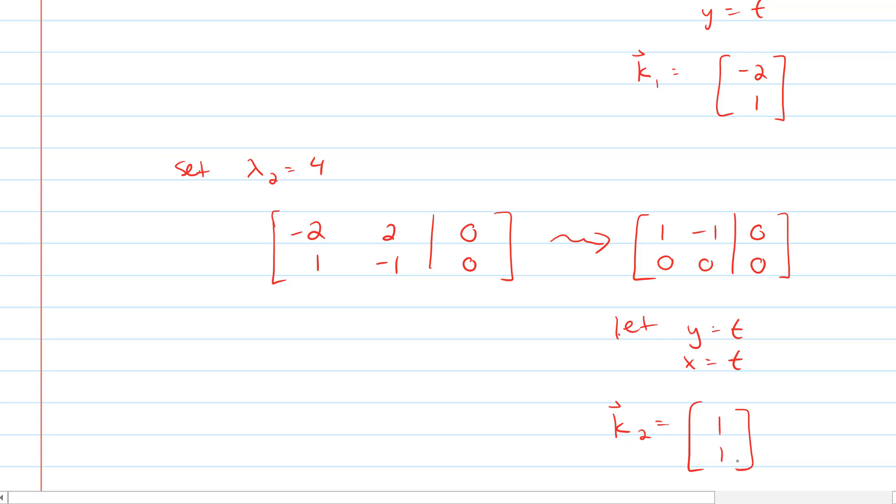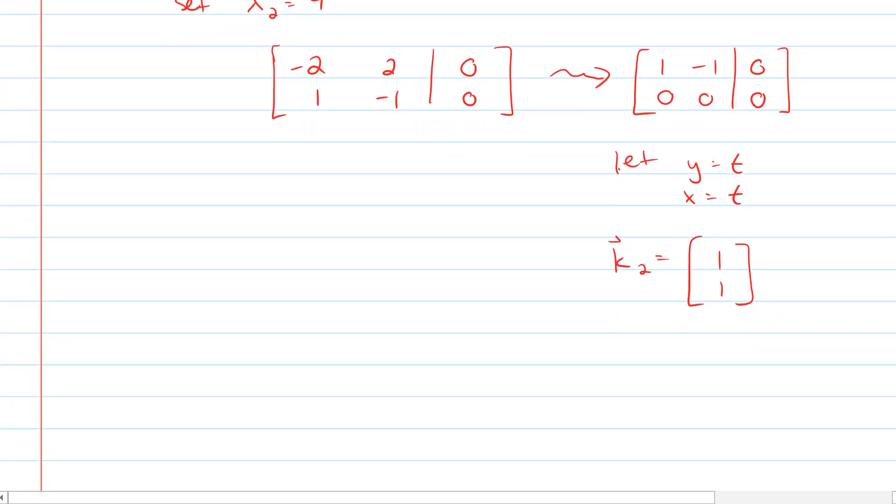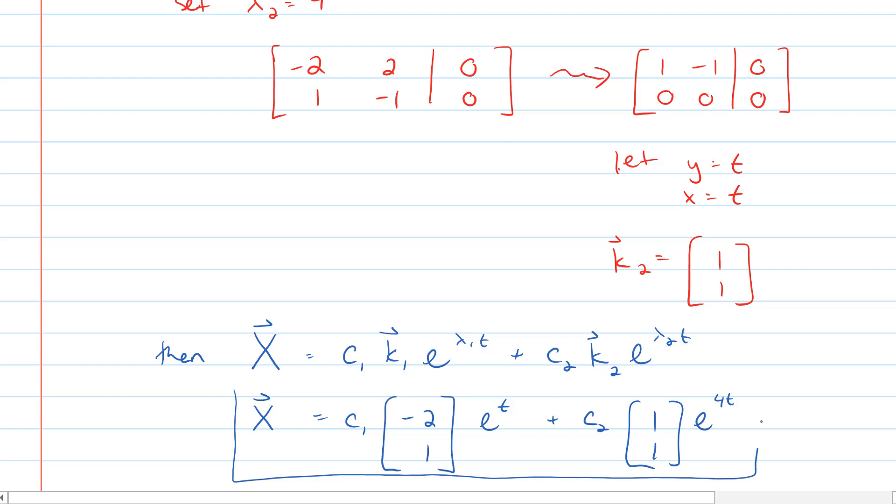And so we've got two distinct eigenvalues with their eigenvectors, and we can just write what the answer is. Our vector capital X is equal to the sum of c_i vector k_i e to the lambda_i t. So it's going to be c1 vector k1 e to the lambda 1 t plus c2 vector k2 e to the lambda 2 t. And we've just found that k1 was negative 2, 1, e to the lambda 1 was 1, so it's just going to be e to the t, plus c2 onto 1, 1, e to the 4t. And that is our solution to the big system.